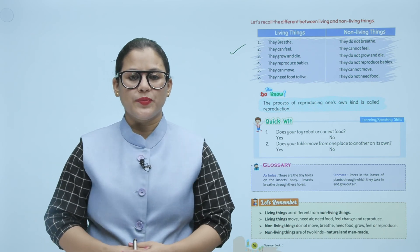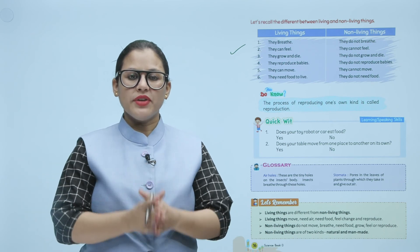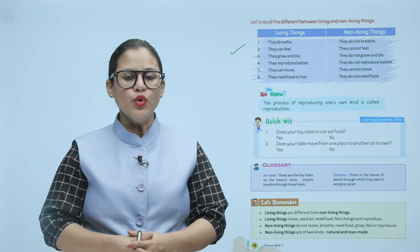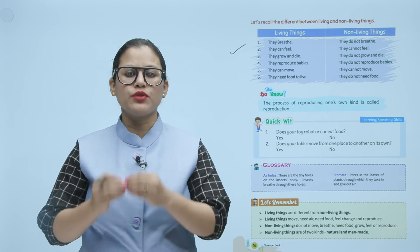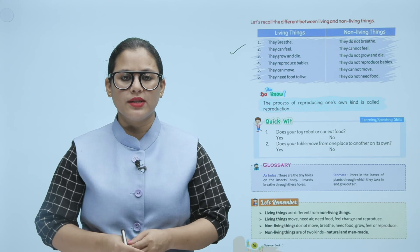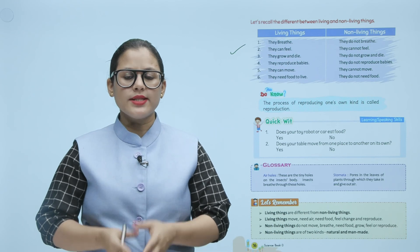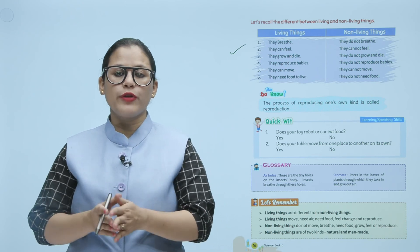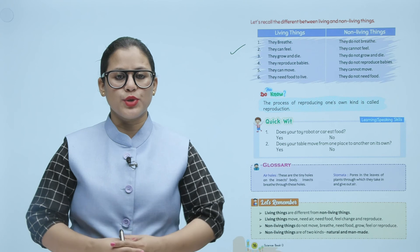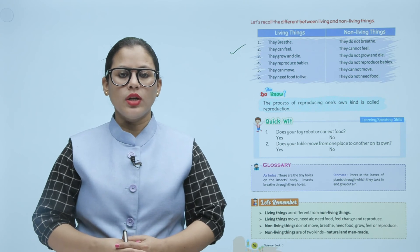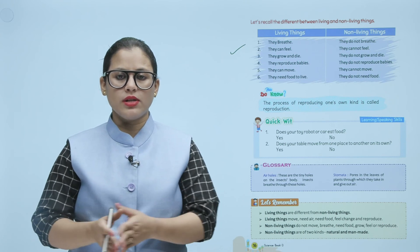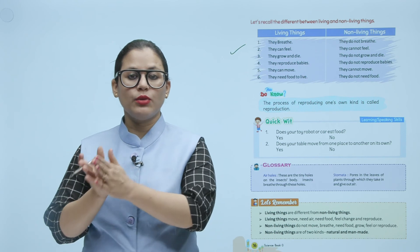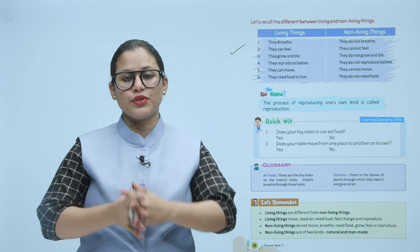Let's remember: living things are different from non-living things. Living things move, need air, need food, feel change, and reproduce. Non-living things do not move, breathe, need food, grow, feel, or reproduce. Non-living things are of two kinds: natural and man-made.